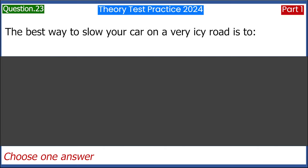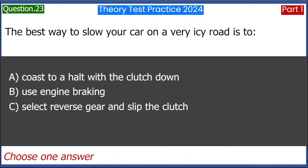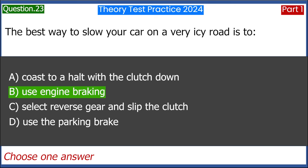The best way to slow your car on a very icy road is to: A. Coast to a halt with the clutch down. B. Use engine braking. C. Select reverse gear and slip the clutch. D. Use the parking brake. Answer: B. Use engine braking.